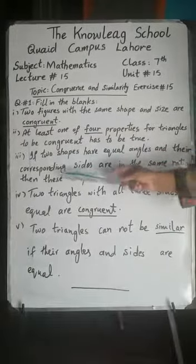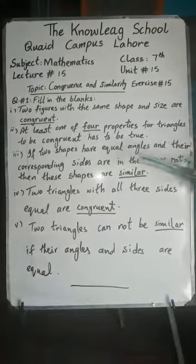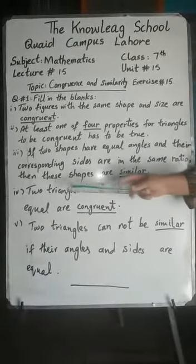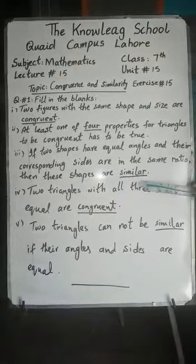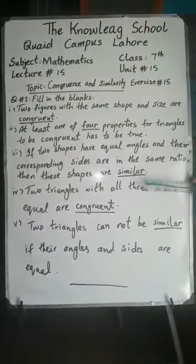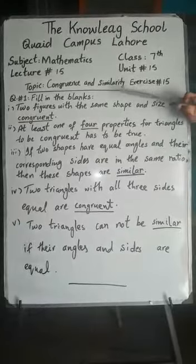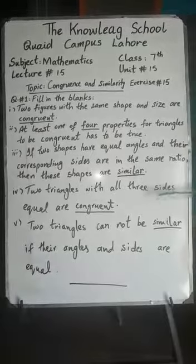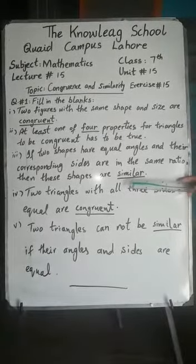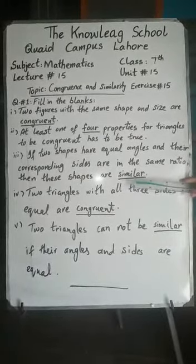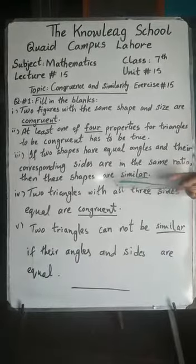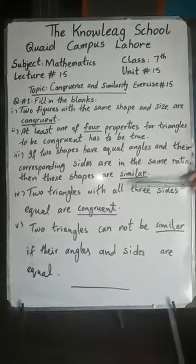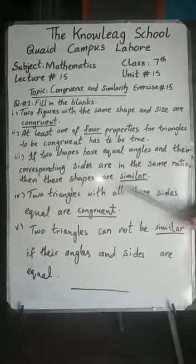Third part: if two shapes have equal angles and their corresponding sides are in the same ratio, then these shapes are similar. Similar triangles have sides in the same ratio, but the size of the triangles may differ. So the answer is similar.